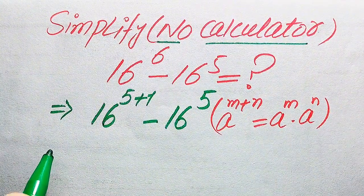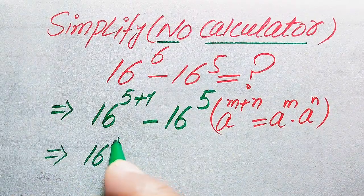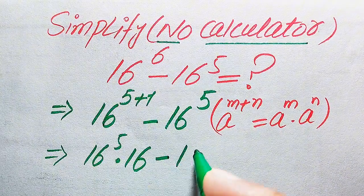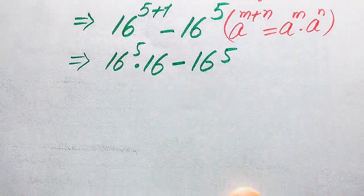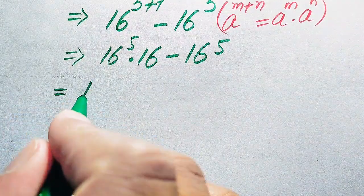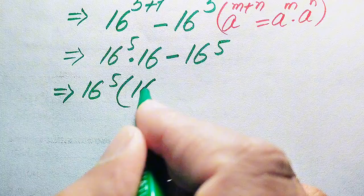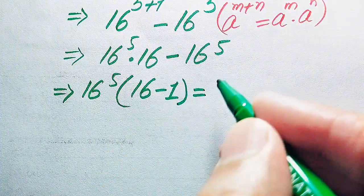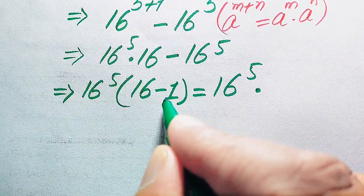According to this rule of exponents, we break the exponent as 16 to the power of 5 multiplied by 16 to the power of 1, minus 16 to the power of 5. Both terms involve 16 to the power of 5, so we take it as a common factor and get 16 to the power of 5 multiplied by (16 minus 1), which equals 16 to the power of 5 times 15.